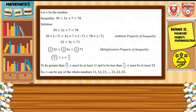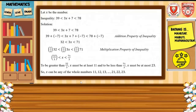The inequality formulated is: 39 is less than 3x plus 7, and 3x plus 7 is less than 78. We use the addition property and multiplication property of inequality to solve. Applying the addition property: 32 is less than 3x and less than 71. Then multiplying by one-third: 32 over 3 is less than x, and x is less than 71 over 3. To be greater than 32 over 3, x must be at least 11.